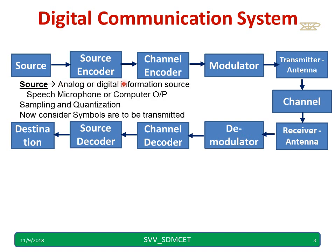The source may be analog or digital. Speech, for example whatever I am talking now, will be converted into an analog signal through the microphone. If you take a computer output, it will usually be zeros and ones. If it is analog, we go for sampling and quantization. Now let us consider symbols being transmitted — A, B, C, D — and see how they are received at the receiver using all these blocks.